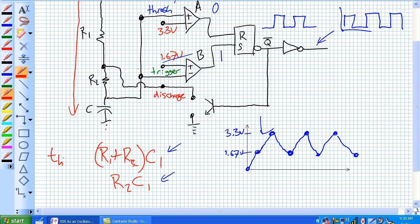Our time high, because that's our charging time, is going to be 0.7 times R1 plus R2 times C1. Our time low is going to be 0.7 times R2, C1, because that's the time it takes to discharge.